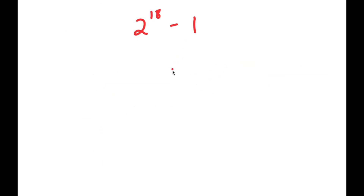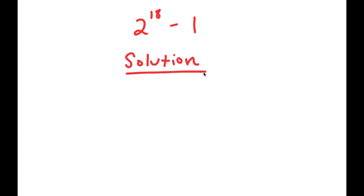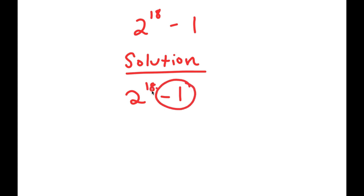In this problem, I have 2 to the power of 18 minus 1. To solve this, I'm going to start by rewriting my problem. So I have 2^18 minus 1. Let's first ignore the minus 1 and just focus on 2 to the power of 18.